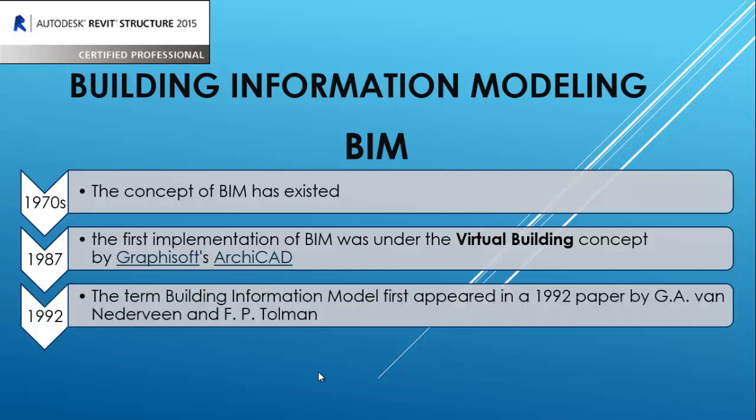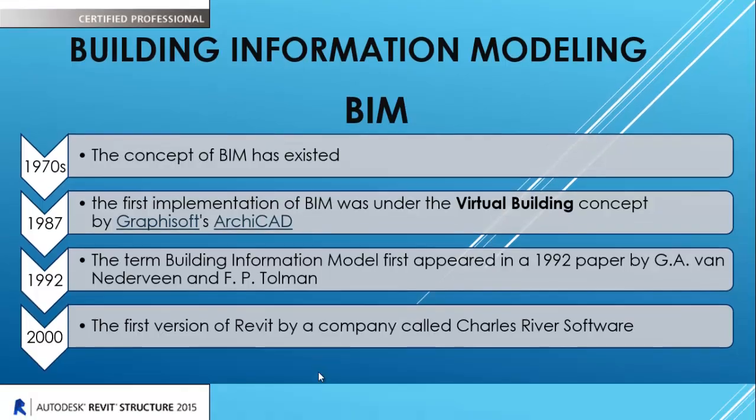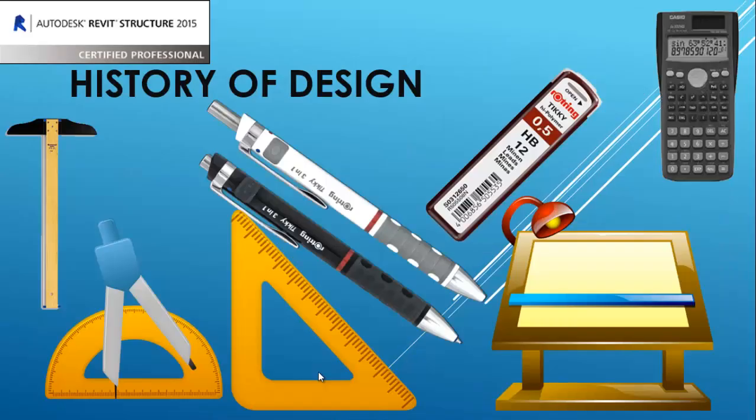After that, the term Building Information Modeling first appeared in 1992. Then the first version of Revit was created by a company called Charles River Software — it was not by Autodesk.